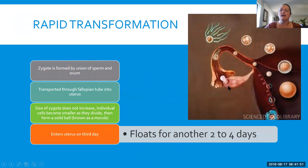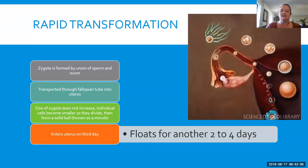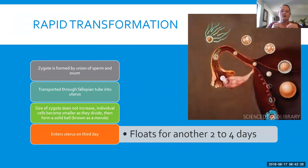Once the egg and sperm have joined, they start going through rapid transformation. Every stage I'm going to talk about is actually an entire specialty — you could spend your entire career studying just the zygote. Once the zygote is formed — the union of sperm and egg — it starts to travel down the fallopian tube. The size of the zygote does not increase, but the cells become smaller as they start to divide. It usually enters the uterus about the third day and then floats around for another two to four days, not yet embedded in the uterus.